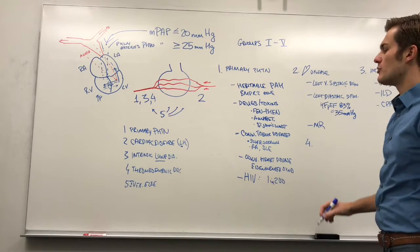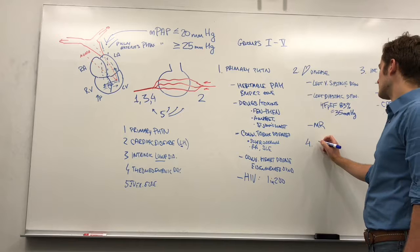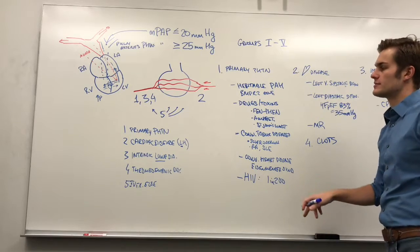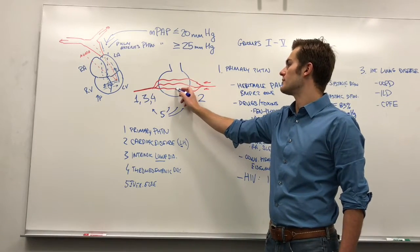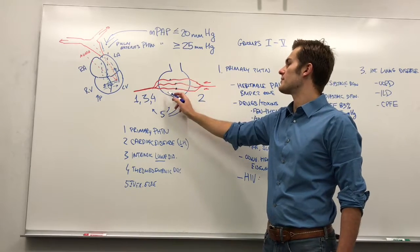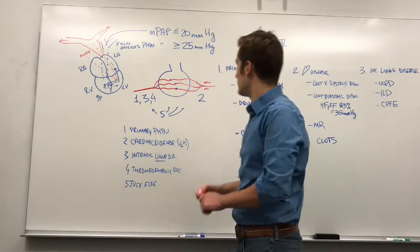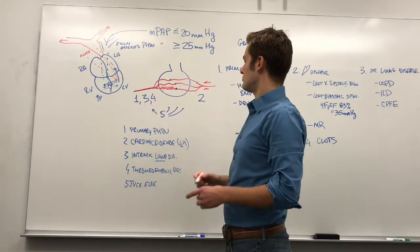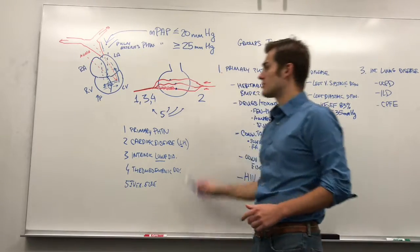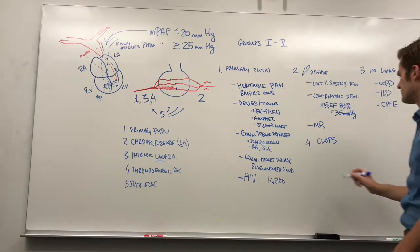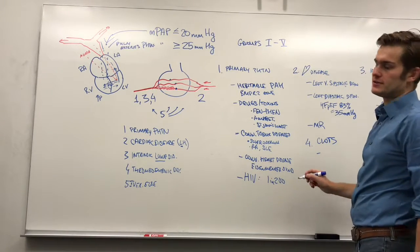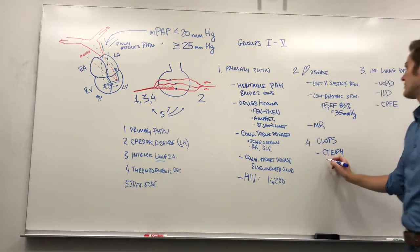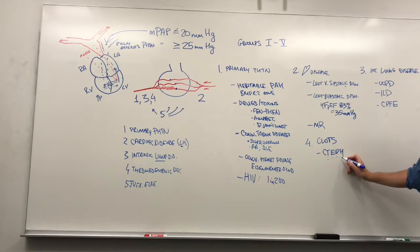Fourth is thromboembolic disease — this is clots. Basically, if you're throwing clots into these arteries and capillaries and they get stuck, the blood coming in has nowhere to go, so pressure is going to increase and that will cause pulmonary hypertension. The big disease we talk about here is CTEPH — chronic thromboembolic pulmonary hypertension. This is a very important one.